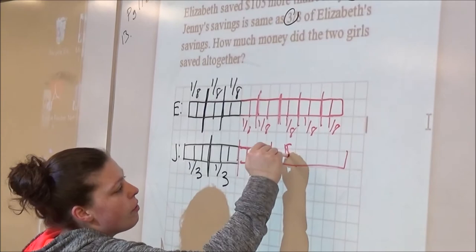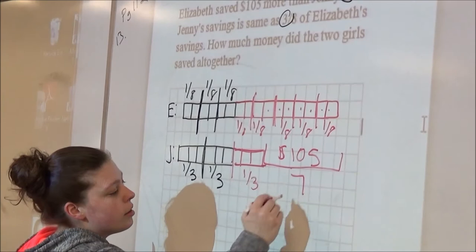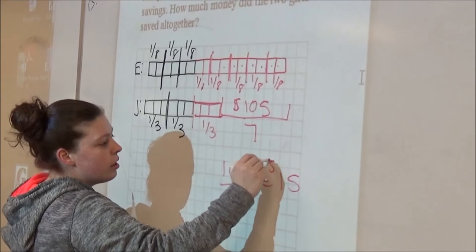The difference is $105. You count the boxes. It's seven boxes. $105 divided by seven is 15.